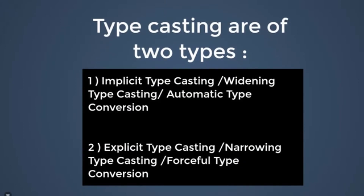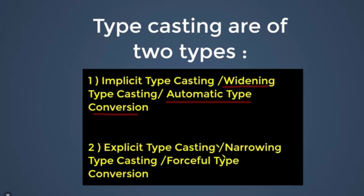Mostly we have two types of typecasting. First is implicit typecasting and second is explicit typecasting. Implicit typecasting is also called widening typecasting or auto type conversion. Explicit typecasting is also called narrowing typecasting and forceful typecasting.